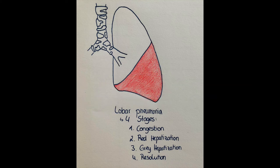The third stage is grey hepatisation, also lasting a few days. Here destruction of erythrocytes occurs, but there is accumulation of fibrin and white blood cells. The fibrin and leukocytes make the lungs appear greyish — called grey hepatisation because the red blood cells from the second stage are removed and a grey-white colour is left behind.